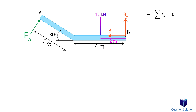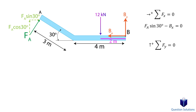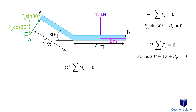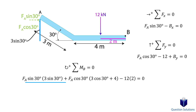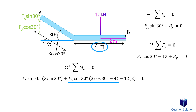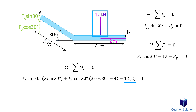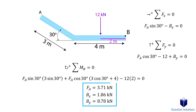Now we write our equations of equilibrium. First, the x-axis forces — note that the reaction at A is at an angle of 30 degrees, so we break it into x and y components. Next, the y-axis forces. We have two equations with three unknowns, so we need one more equation: a moment equation about point B, since there are two unknowns there. We assume clockwise to be positive. For the force at A, the x-component has a perpendicular distance of 3 sin 30°, and the y-component has a distance of 4 meters plus 3 cos 30°. The only other force is the 12 kN force, 2 meters from point B. We now have three equations with three unknowns, and solving gives us the reactions at A and B.